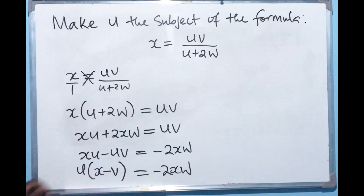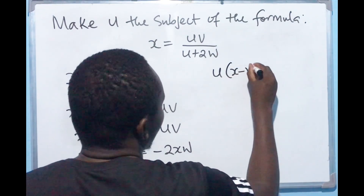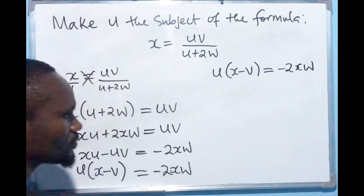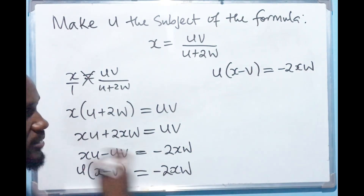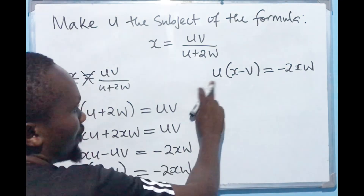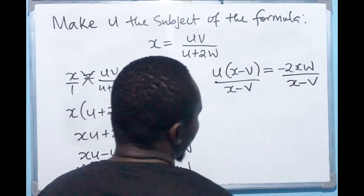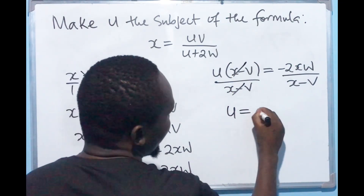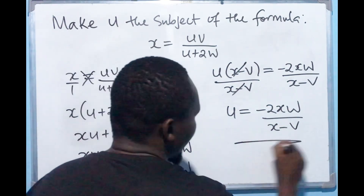So once we have that, we have u(x minus v) equals minus 2xw. Now what we are going to do is divide both sides by (x minus v), because our aim is to make sure that u remains alone on one side. So dividing by (x minus v) on both ends, this cancels out, and we have u equals minus 2xw over (x minus v). That is the answer.